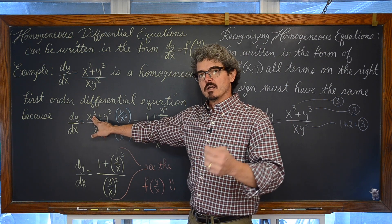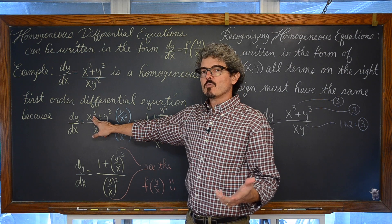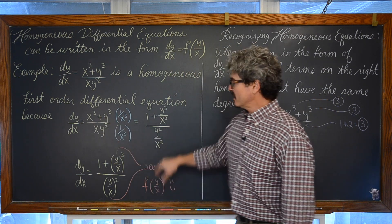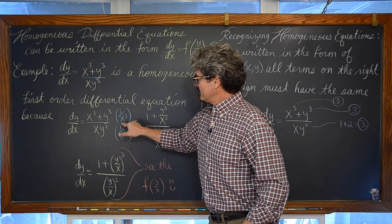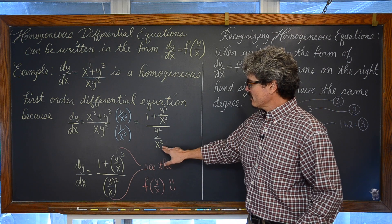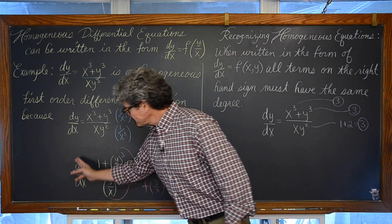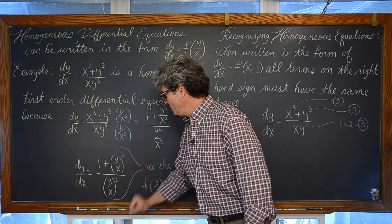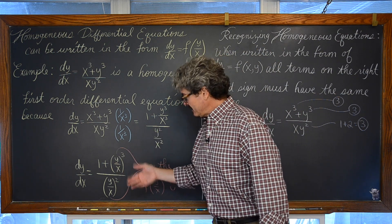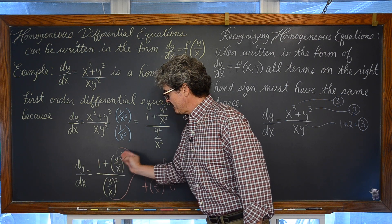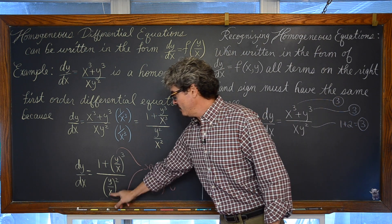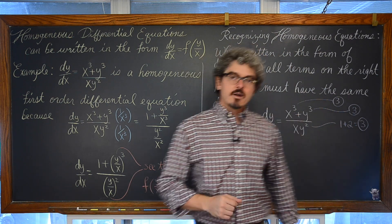We see here that we have on the right hand side a term of x cubed. That's certainly not in the form of some kind of y over x. So maybe I divide both the numerator and denominator by x cubed so that this first term becomes a one. Well, y cubed divided by x cubed is going to be y cubed over x cubed. And here we have xy squared divided by x cubed, which is going to yield y squared over x squared. This can be rewritten as dy/dx is equal to 1 plus (y/x) cubed over (y/x) squared. So we have that f of y over x format.